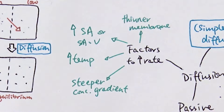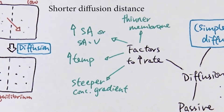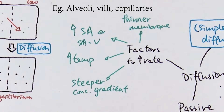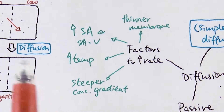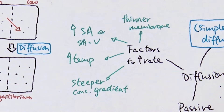You need to be aware of factors that increase the rate of diffusion. First, if diffusion is through a membrane, the thinner the membrane, the shorter the diffusion distance, and the quicker it will be. Examples include the alveoli or the villi, where the walls are one cell thick, giving a very short diffusion distance. A higher surface area or surface area to volume ratio also makes diffusion quicker.